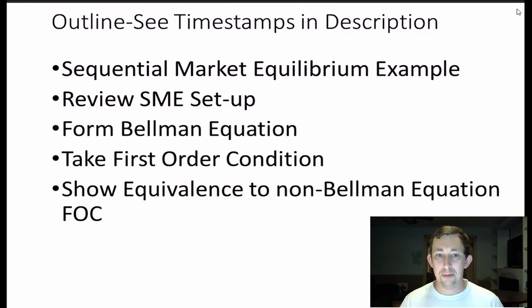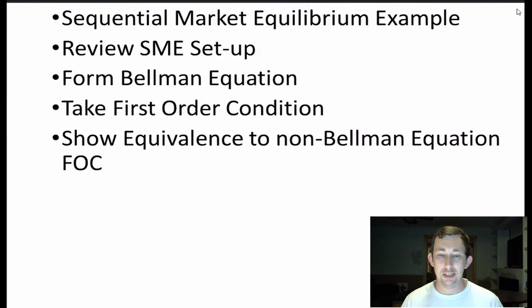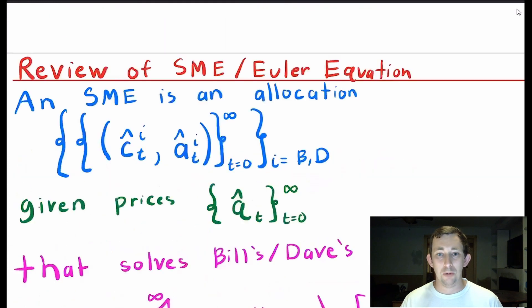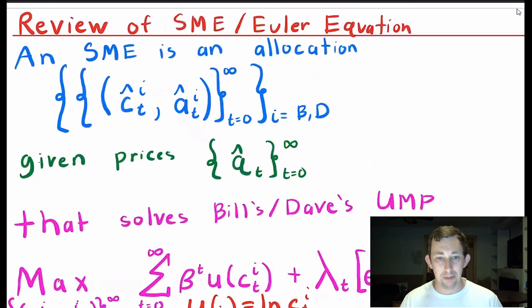We'll form the Bellman equation, we'll take a first order condition using that Bellman equation, then we'll show that it is equal to the sequential market equilibrium first order condition that we got when we don't use the Bellman equation.